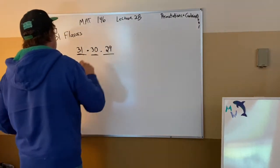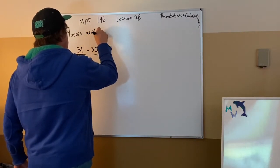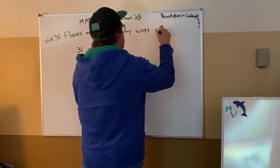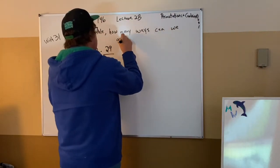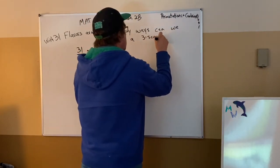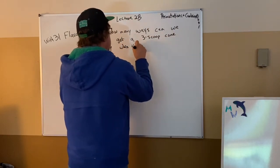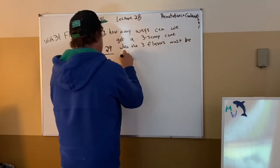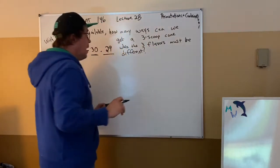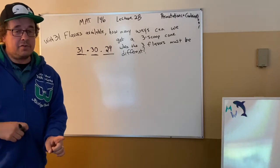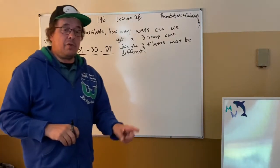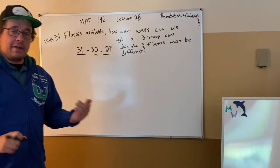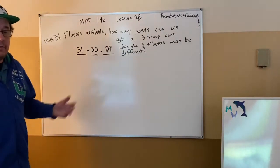With 31 flavors available, how many ways can we get a three-scoop cone when the three flavors must be different? If you don't think it matters what's on top, I'm guessing you've either not been to an ice cream store with a child, or you went with a very well-behaved child. It's easy enough to wait until a kid starts crying because they wanted the chocolate on top of the vanilla.